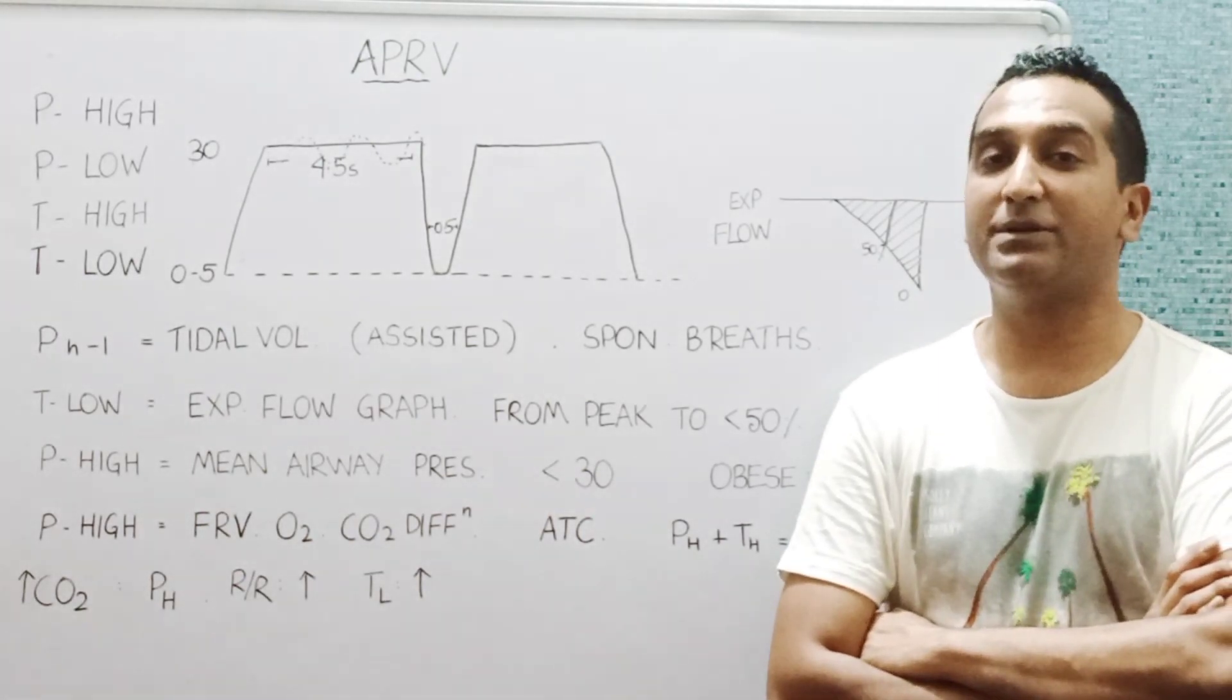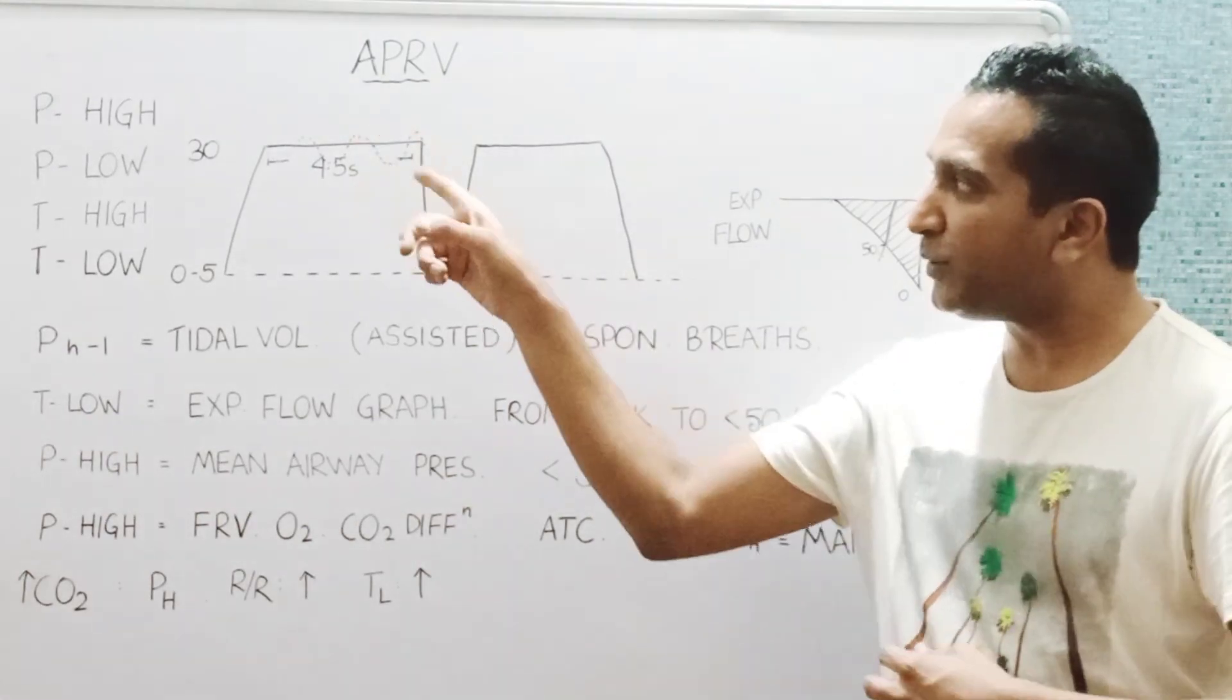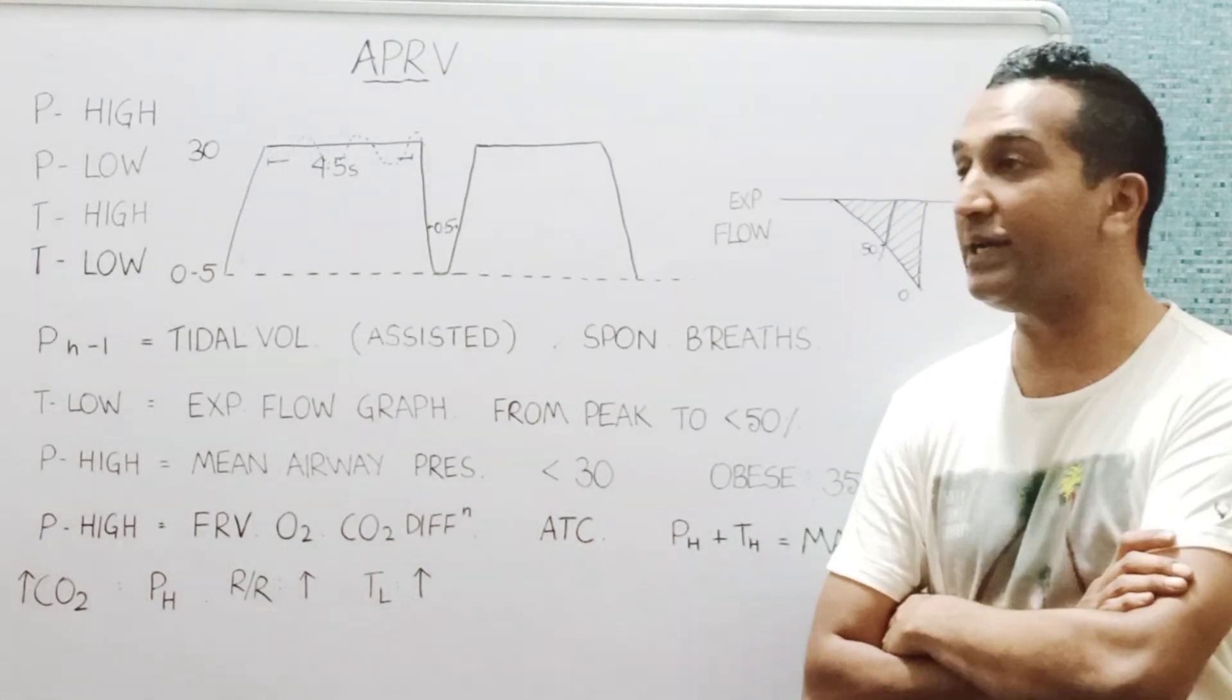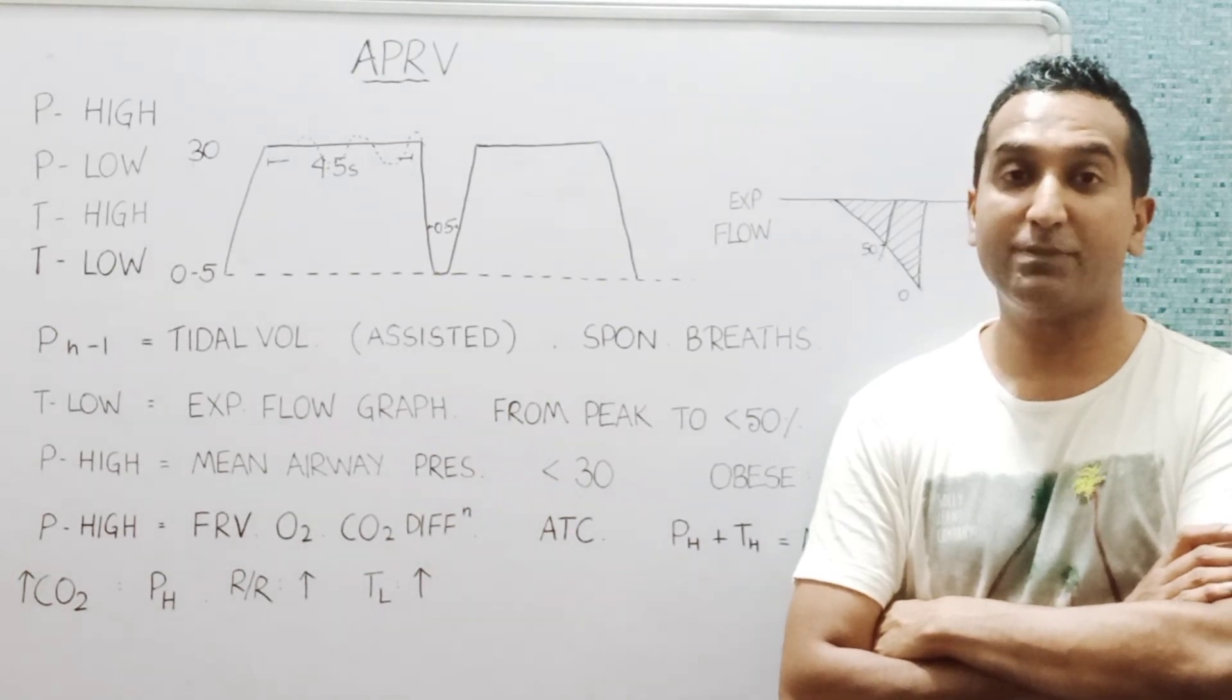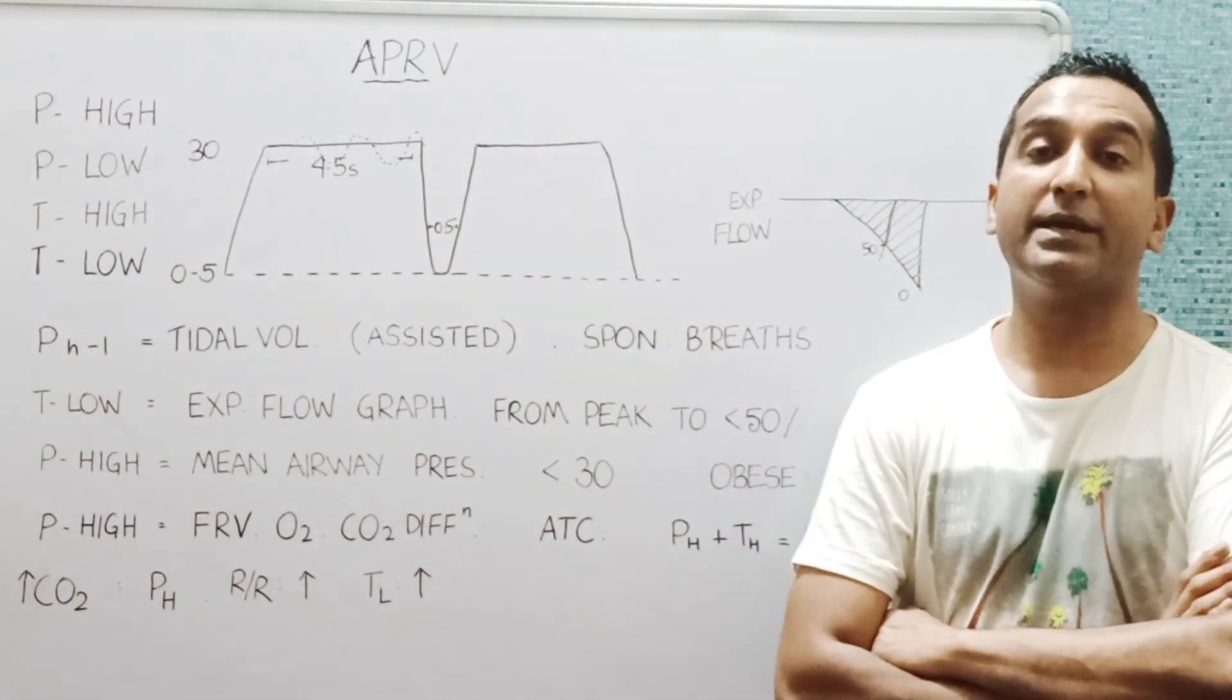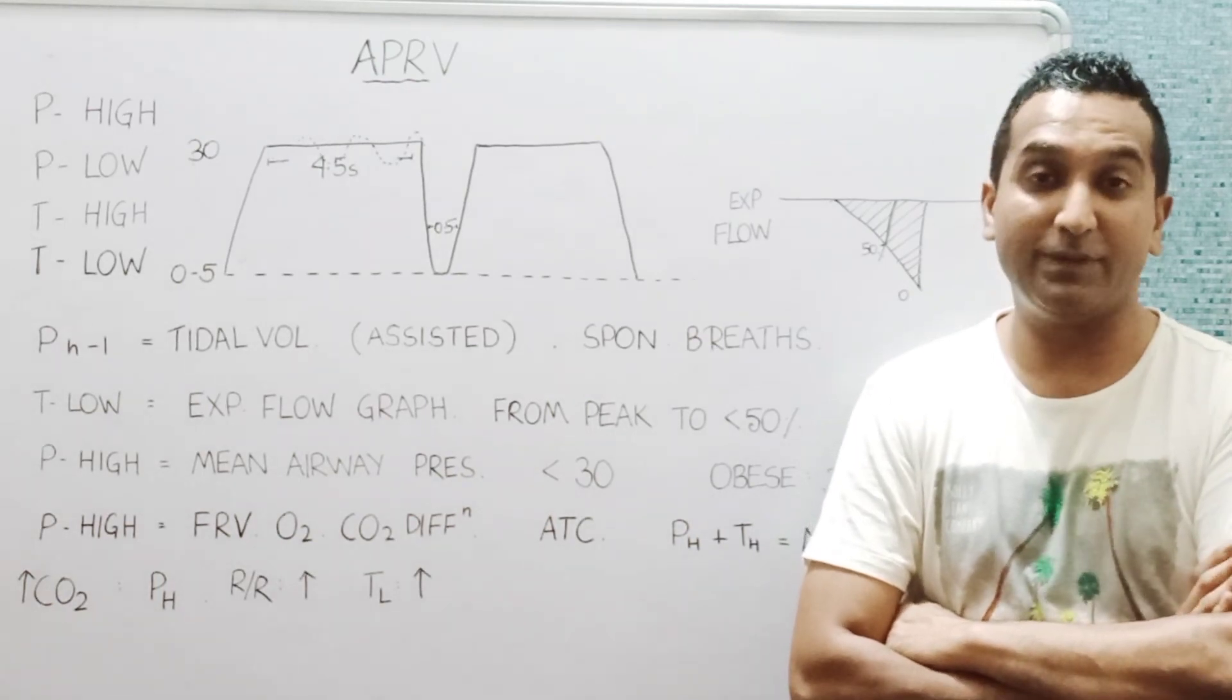The difference between the P high and the P low also determines the volume delivered with each release, and we look for a target of something like 6 ml per kg body weight. There is a huge excursion because the P low is generally kept very low. Conventionally it was zero centimeters of water.